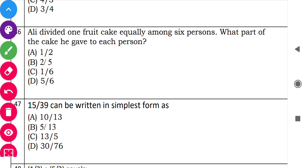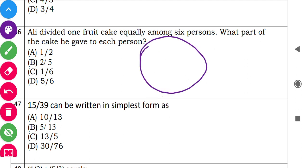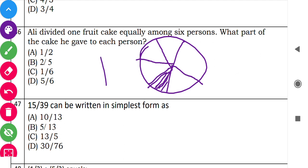Question 46: 'Ali divides one cake equally among 6 persons. What part of the cake does he give to each person?' If a cake is divided into 6 equal parts, each person gets 1 part out of 6 total parts. So each person gets 1 upon 6 of the cake. Option C is correct.